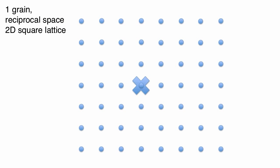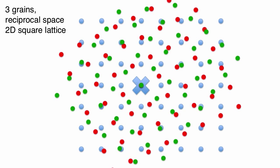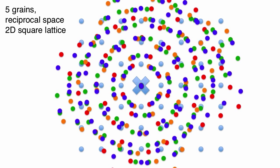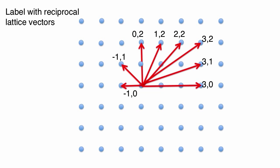But instead of just two grains, powders are made up of many grains. Exactly, and all these randomly-oriented grains interact together with the beam. This superposition yields an effective reciprocal space that is made up of these concentric spheres that we can label using reciprocal lattice vectors.